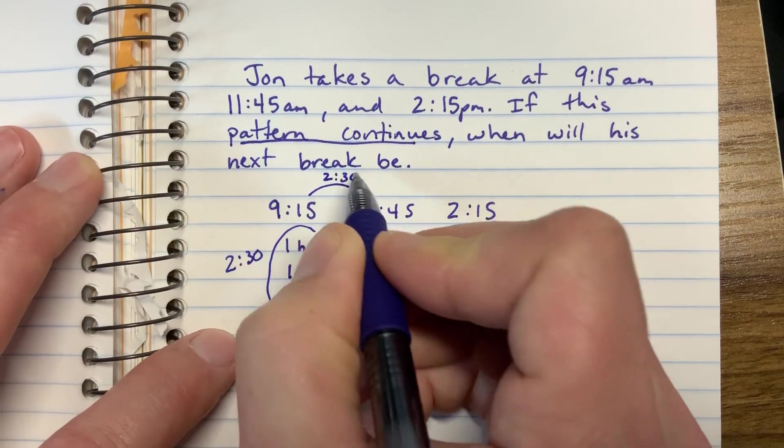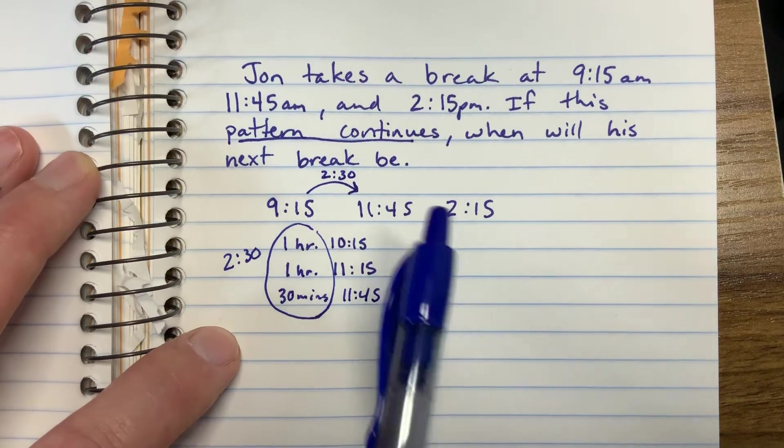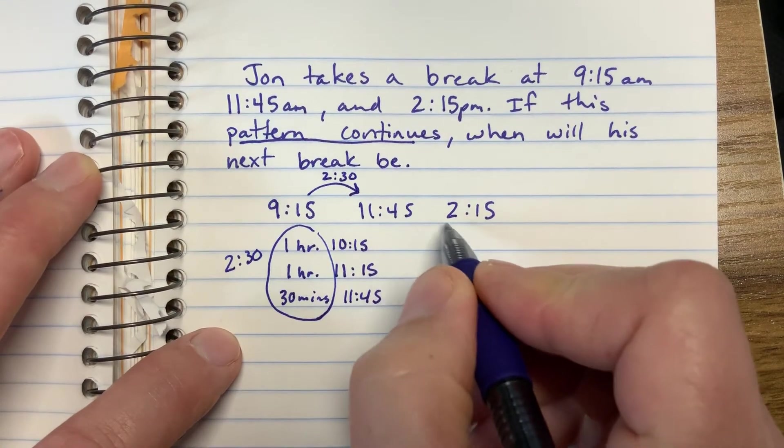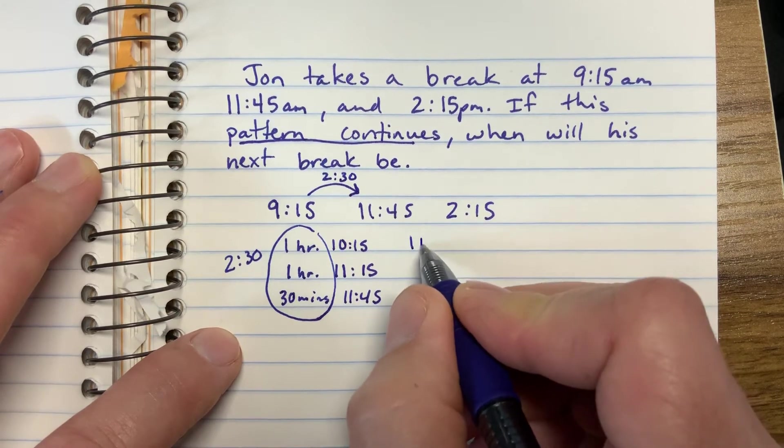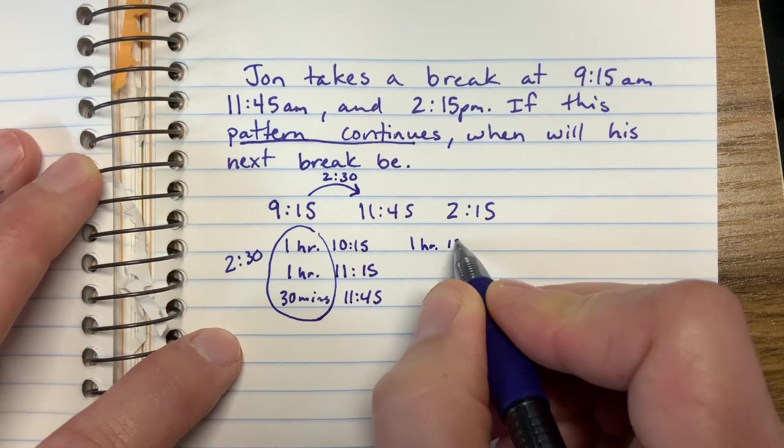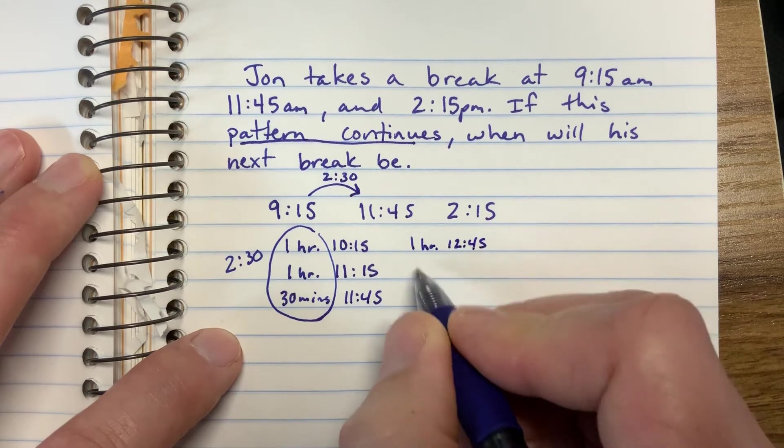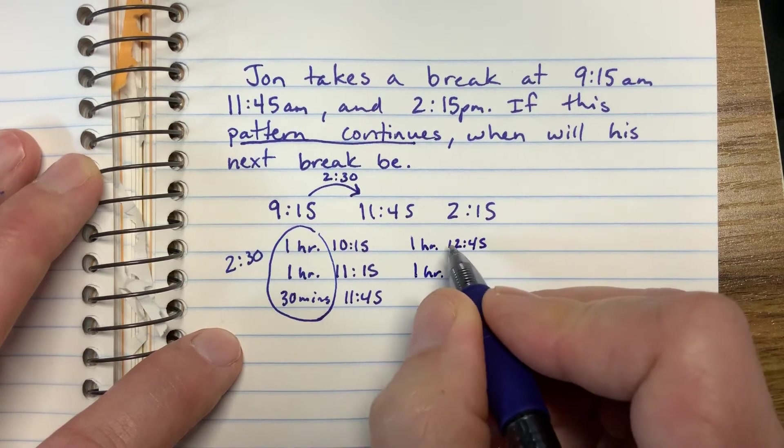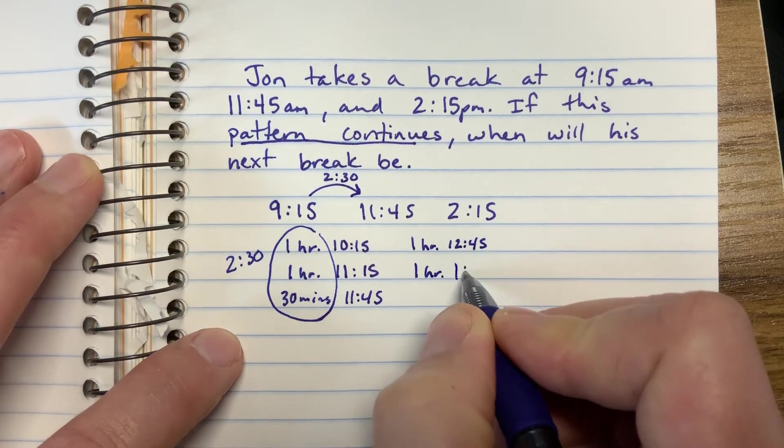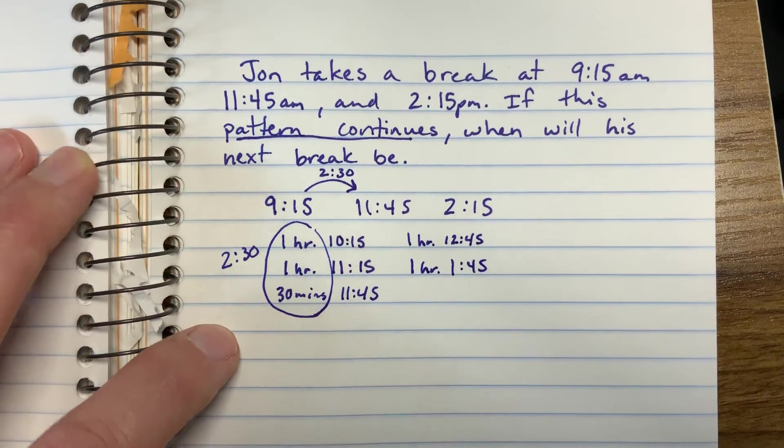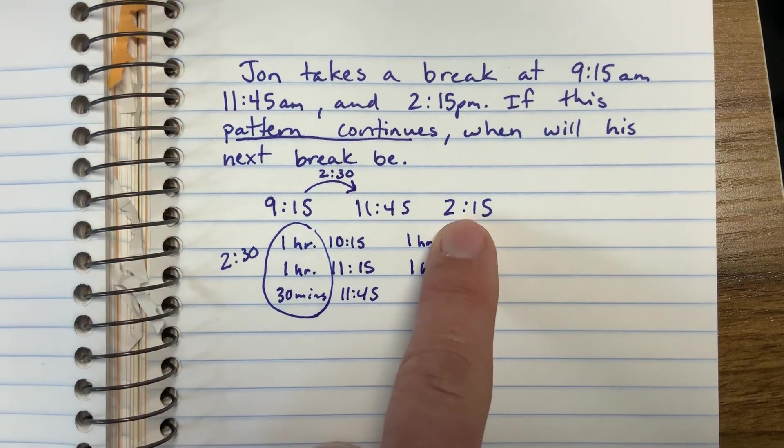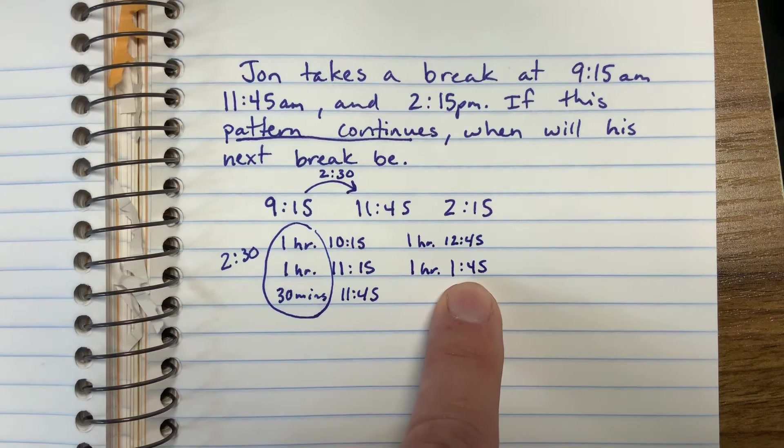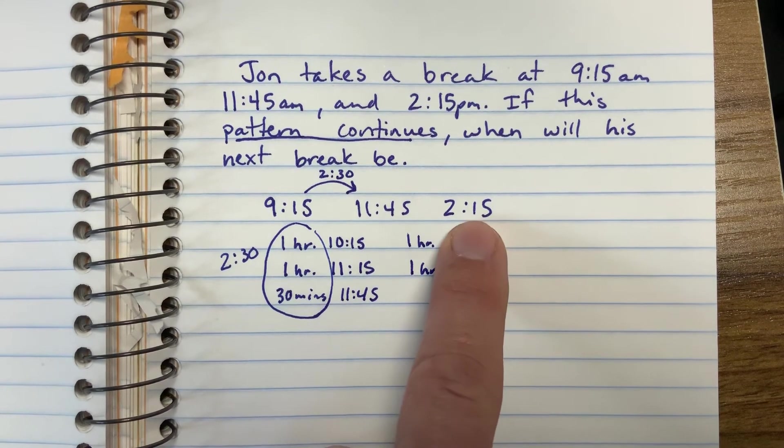Two hours and 30 minutes. So let's check and see between 11:45 and 2:15. If I add an hour to 11:45, I get 12:45. If I add another hour to 12:45, I get 1:45, which is not quite 2:15. If I add another hour, that would bring me to 2:45, which would be too much. So how many minutes do I need to add to 1:45 to get to 2:15?